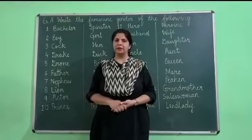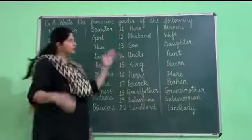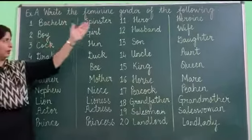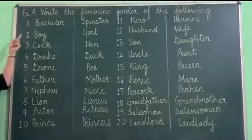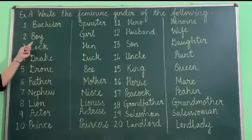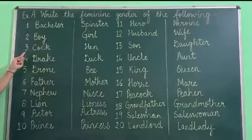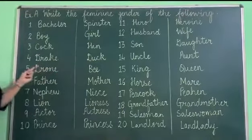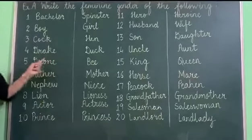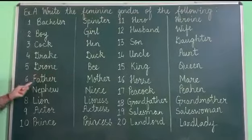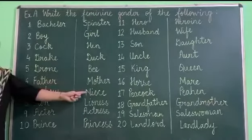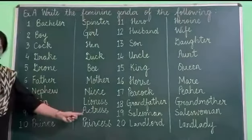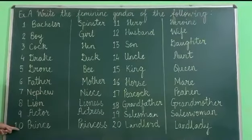Children, now write these 20 genders in your notebook. Exercise A — heading: Write the feminine gender of the following. Number one: Bachelor / Spinster. Number two: Boy / Girl. Number three: Cock / Hen. Number four: Drake / Duck. Number five: Joel / Bee. Number six: Father / Mother. Number seven: Nephew / Niece. Number eight: Lion / Lioness. Number nine: Actor / Actress. Number ten: Prince / Princess.